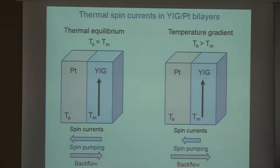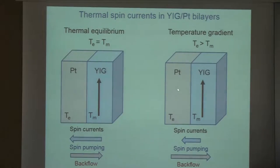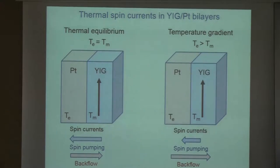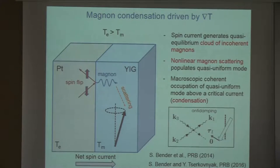If you apply a temperature gradient across such a bilayer, you can have different temperatures — for example, electrons in platinum at a higher temperature than the magnons in YIG. In this case, the balance of spin currents is broken and you can have a net spin current flowing from platinum into the YIG. What can we expect from such a net spin current injected by a temperature gradient into the YIG film?